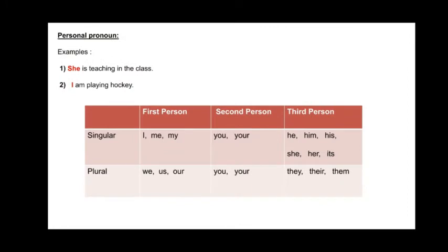Personal pronoun. What is the meaning of personal pronoun? A personal pronoun is used in place of the names of a person, animals, and things. For example: She is teaching in the class — here the word 'she' is a personal pronoun. I am playing hockey — here the word 'I' is a personal pronoun.